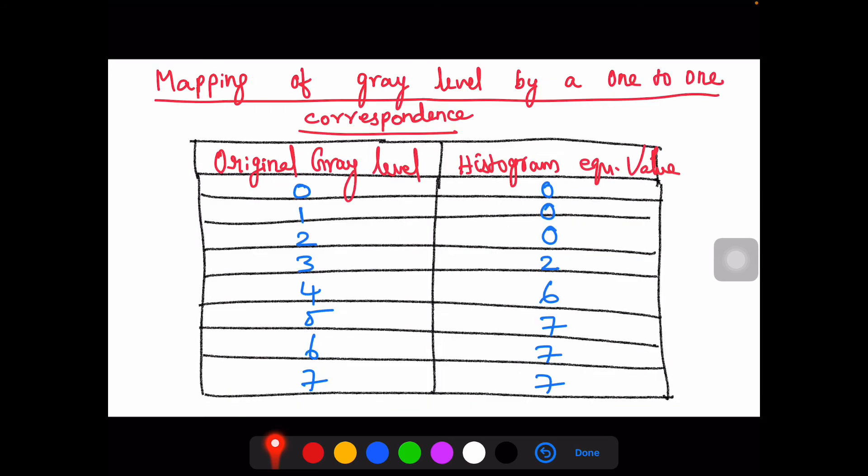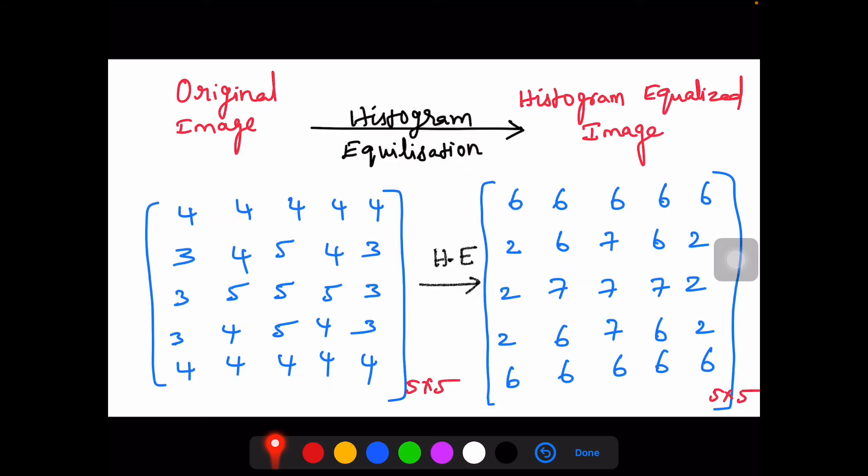The next step is finding one-to-one correspondence mapping. The original gray values of the original image are given as 0 to 7. After applying histogram equalization, I can find that the values or the range: 0 maps to 0, 3 maps to 2, 4 maps to 6, 5 maps to 7. That is what we obtained from the previous table.